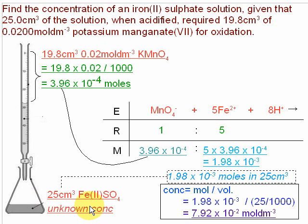In terms of reviewing what we've got so far, we've got a volume and a concentration of potassium permanganate, and we've got a volume but an unknown concentration of iron-2.